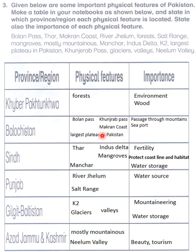The importance of any pass is that it is a passage through mountains. The Makran Coast serves as a seaport. The plateau is higher than sea level, but in the case of Balochistan it is not very fertile. Then Sindh has the Thar Desert, Manchur Lake, Indus Delta, and Mangroves.